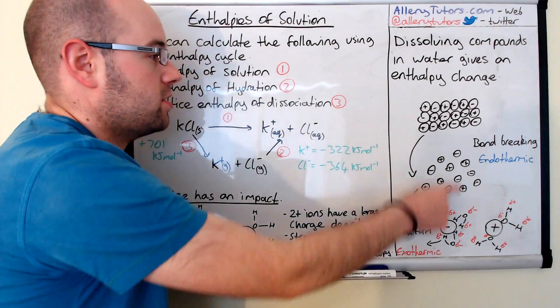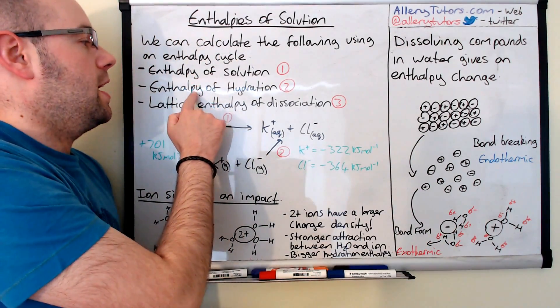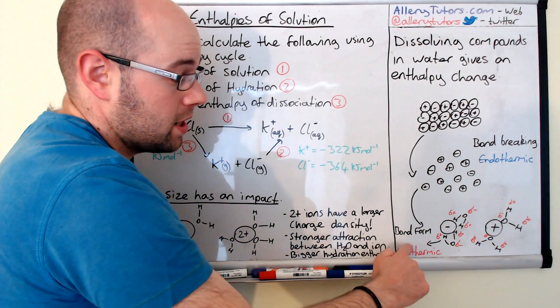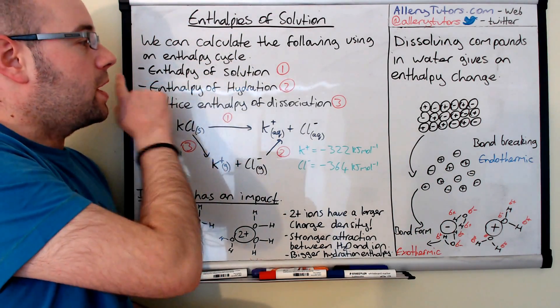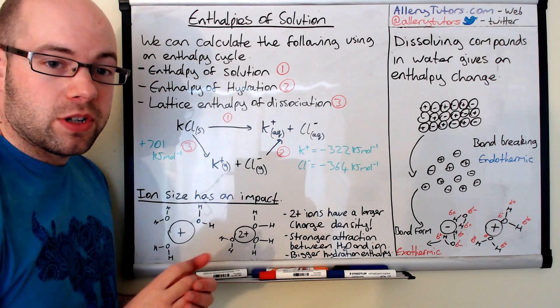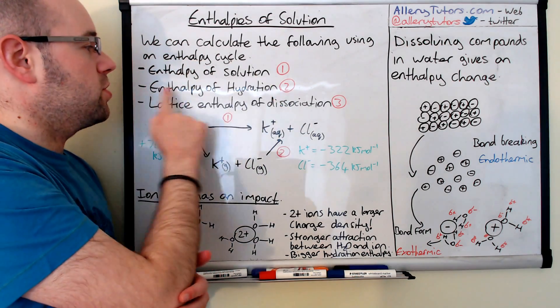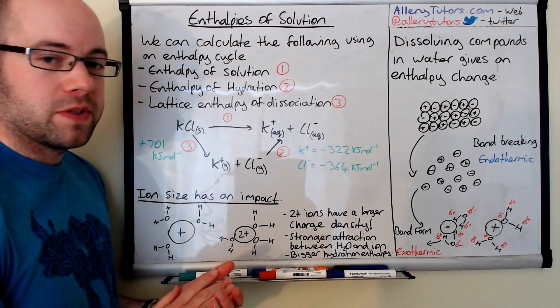Now this is like a two-step process. Obviously in reality and what actually happens is this happens in one full swoop. So you can see here we've got our solid ionic compound and we're forming a solution. So we call this an enthalpy of solution, going from the solid ionic compound to the hydrated ionic form. So this whole process, the whole thing, is called enthalpy of solution. This takes into account an endothermic process and an exothermic process.